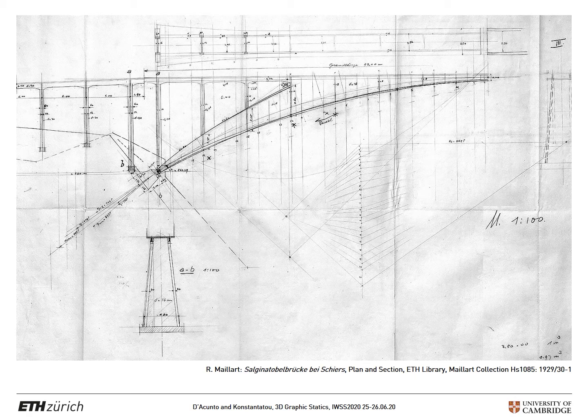Graphic statics is based on two diagrams: the form diagram and the force diagram. The first one shows the geometric layout of a loaded structure and the forces applied to it.